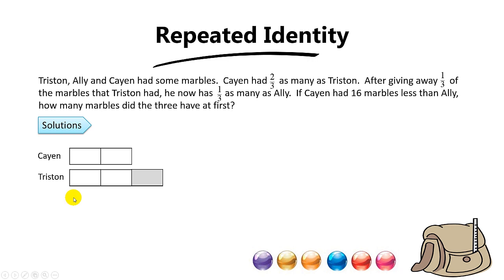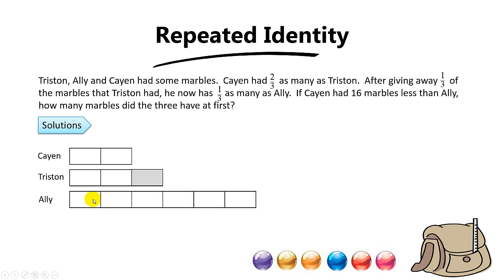The answer is six. Why? Because two times three gives you six. So you draw one, two, three, four, five, six — six units for Ellie.